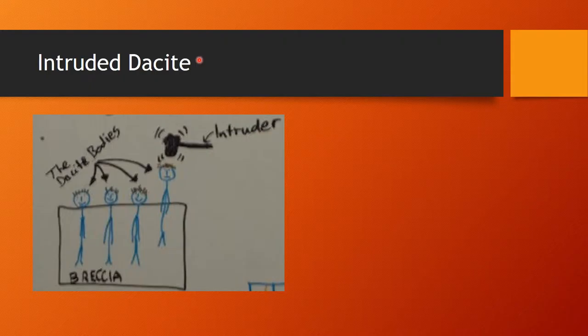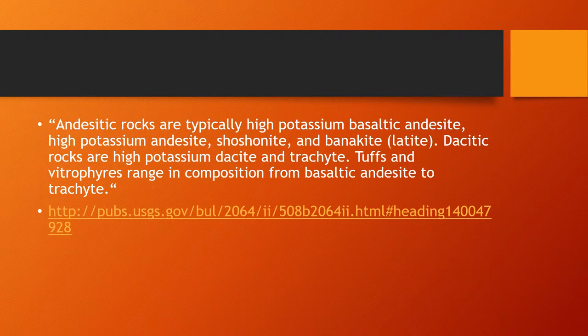After that, we find some intrusions of dacite, and here is an educational illustration of what this might look like. We can see these dacite bodies intruded into the surrounding rock, which probably includes some breccia among everything else we've discussed.